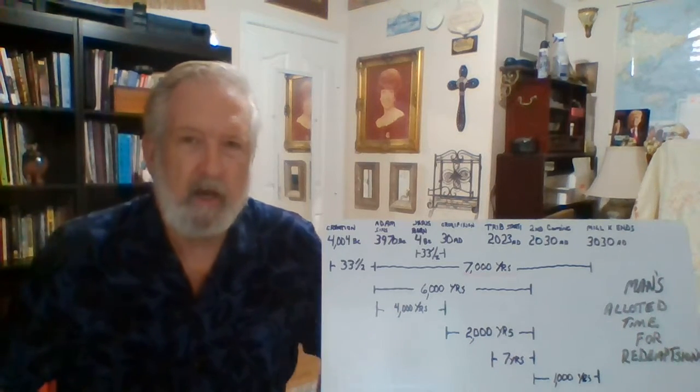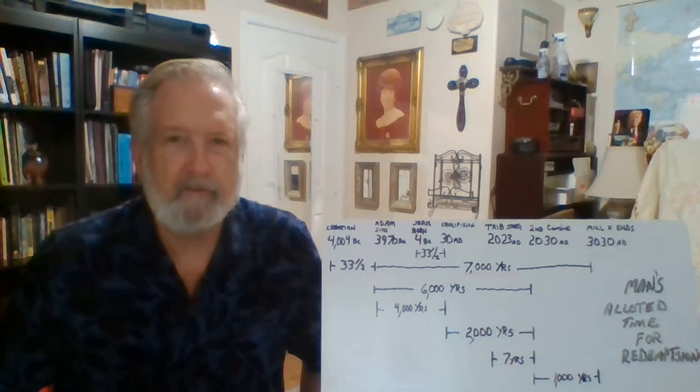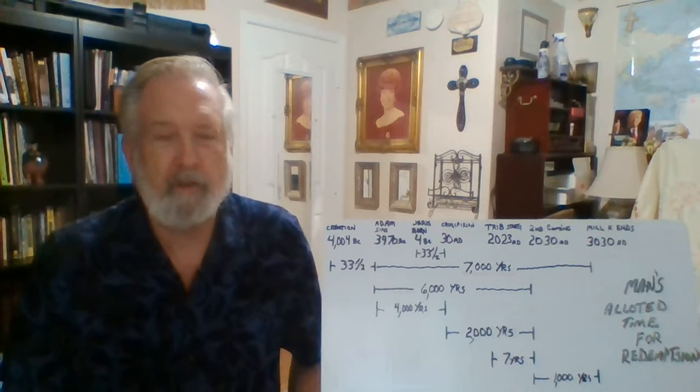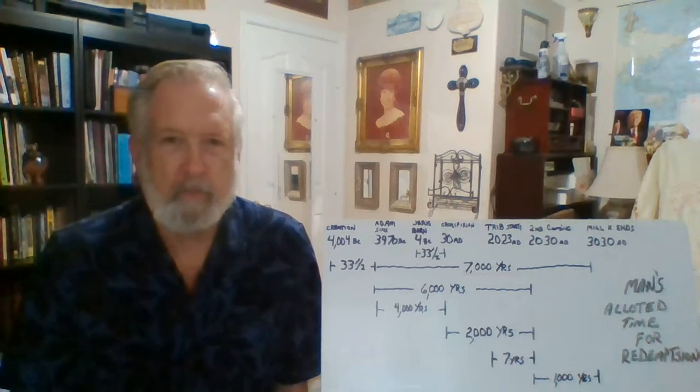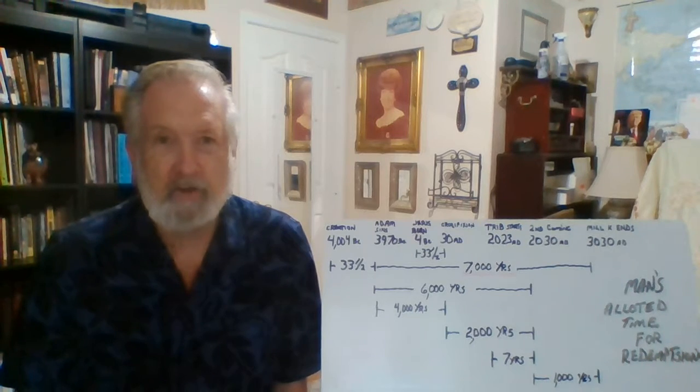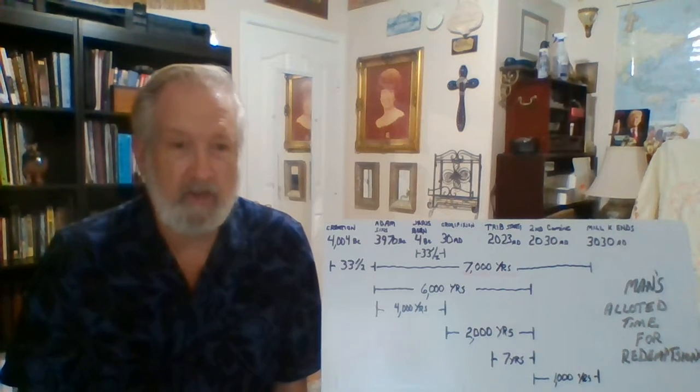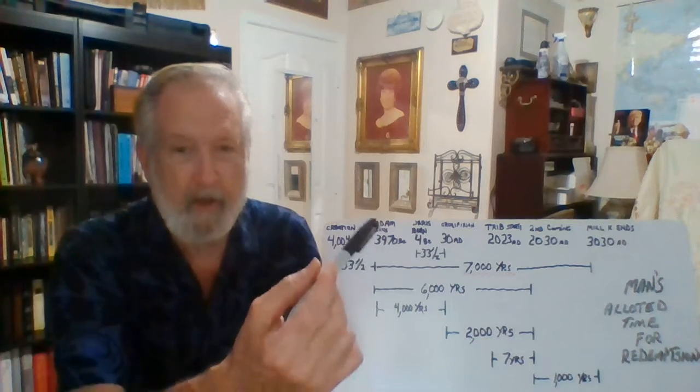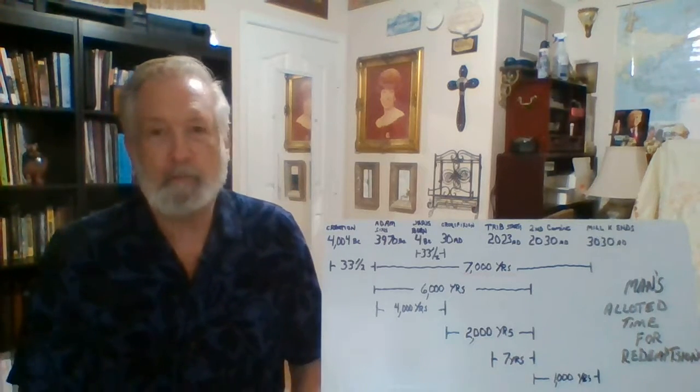Now this is an old school teaching of prophecy, one of the oldest, and the problem that they made in years past is that they started with the year of creation up here, 4004 BC.